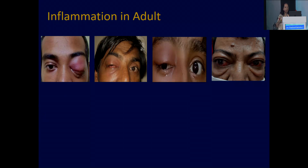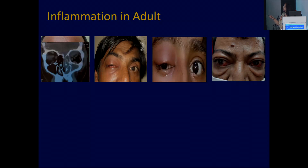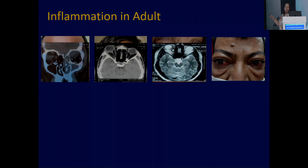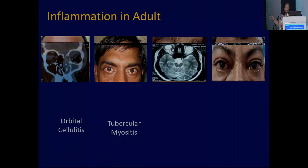These are almost similar age groups. What is this? Looks like orbital cellulitis. What is this? The sinuses are involved. What is this? The inferior rectus muscles are involved. What is this? Myocysticercosis. And this — thyroid eye disease. See the typical sign: the Coca-Cola sign of thyroid eye disease. Most of the muscles are involved. After getting treatment, see the wonderful response — all the patients have improved.